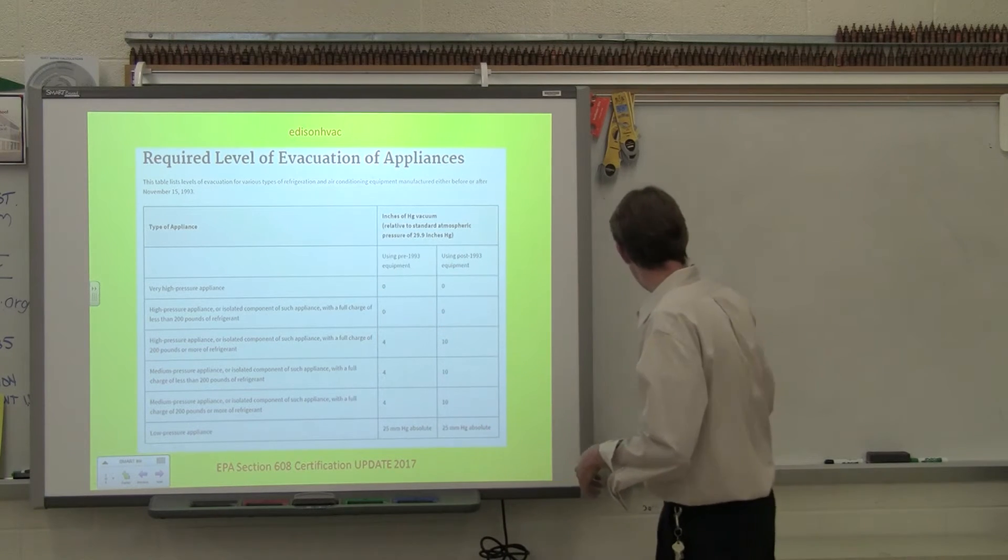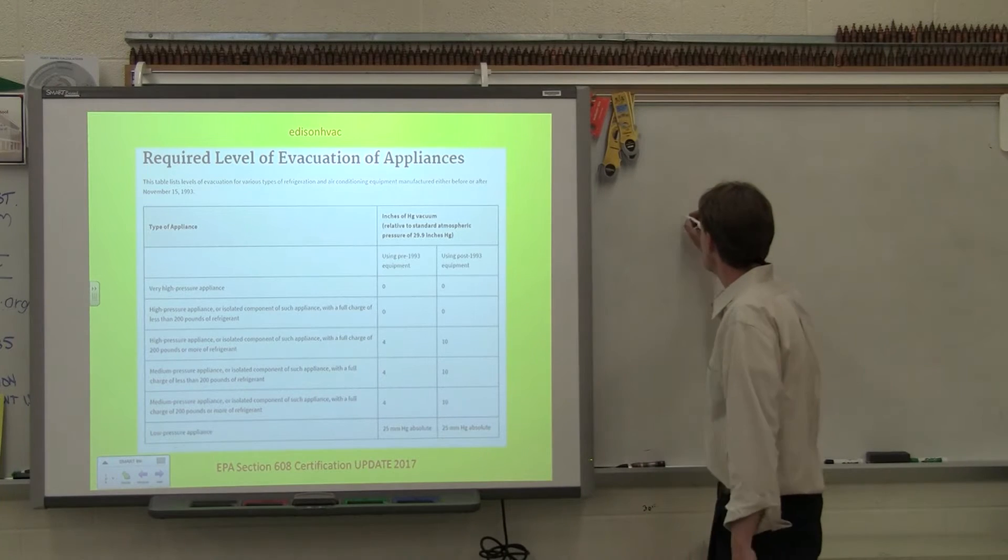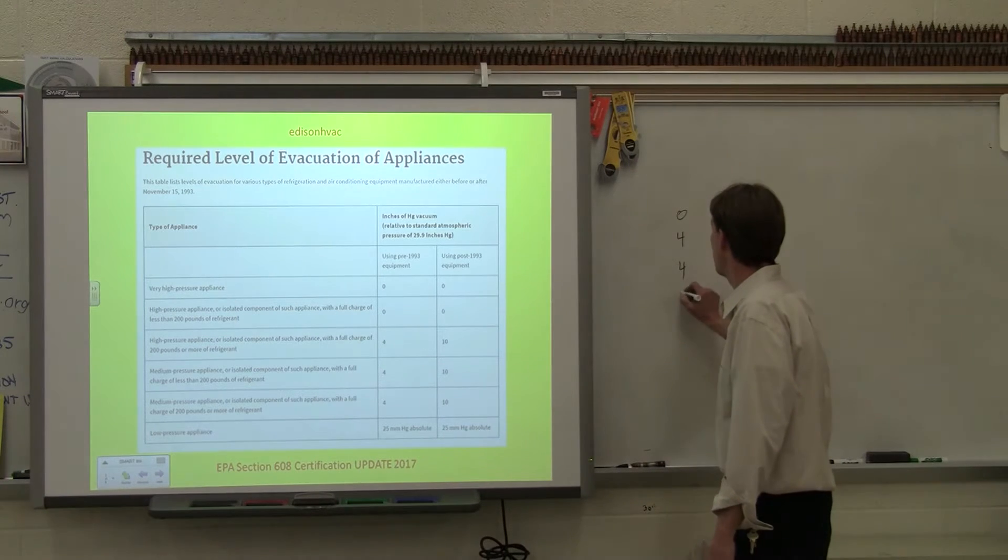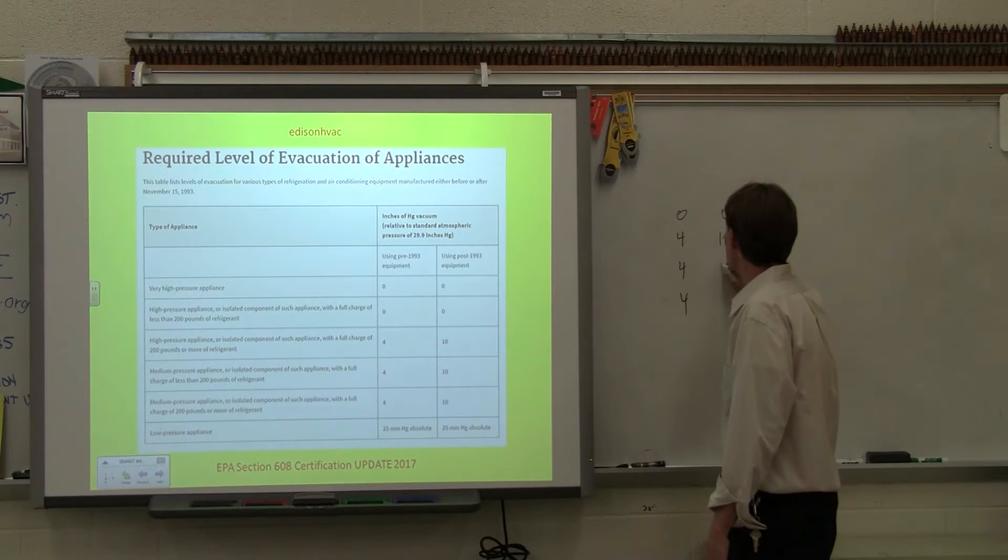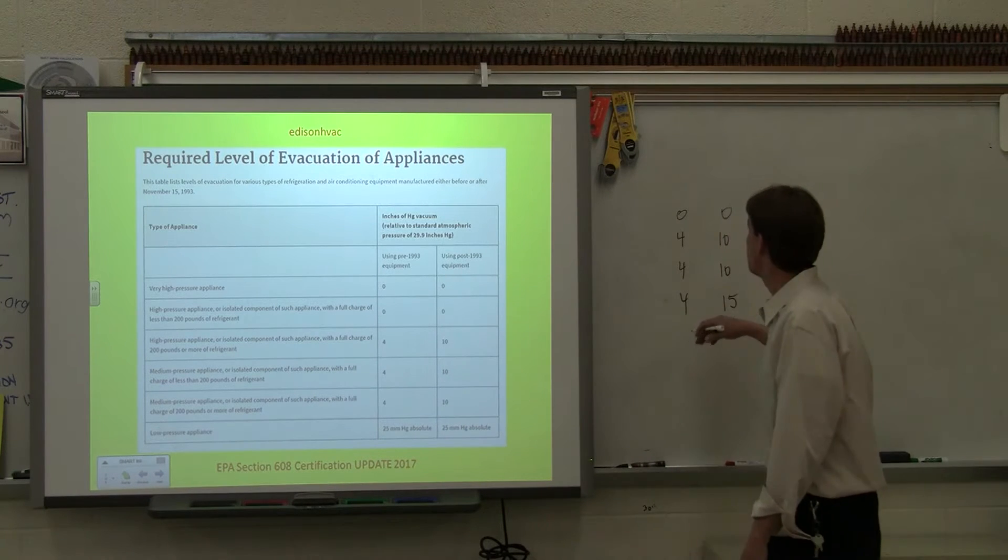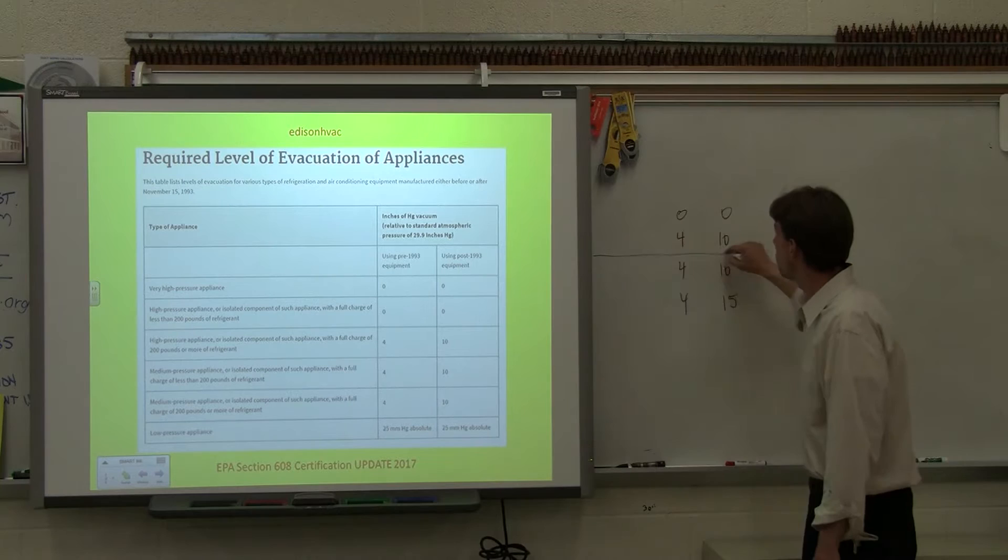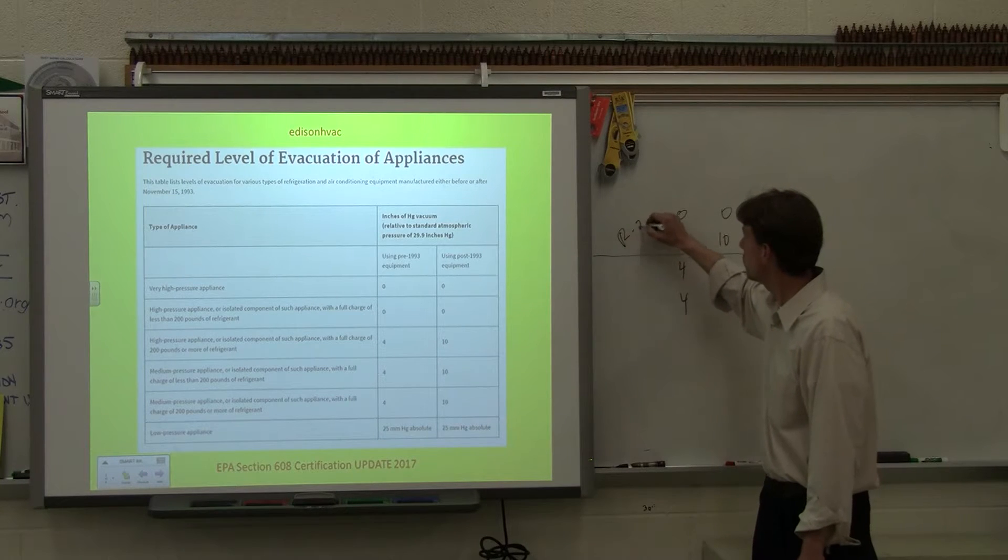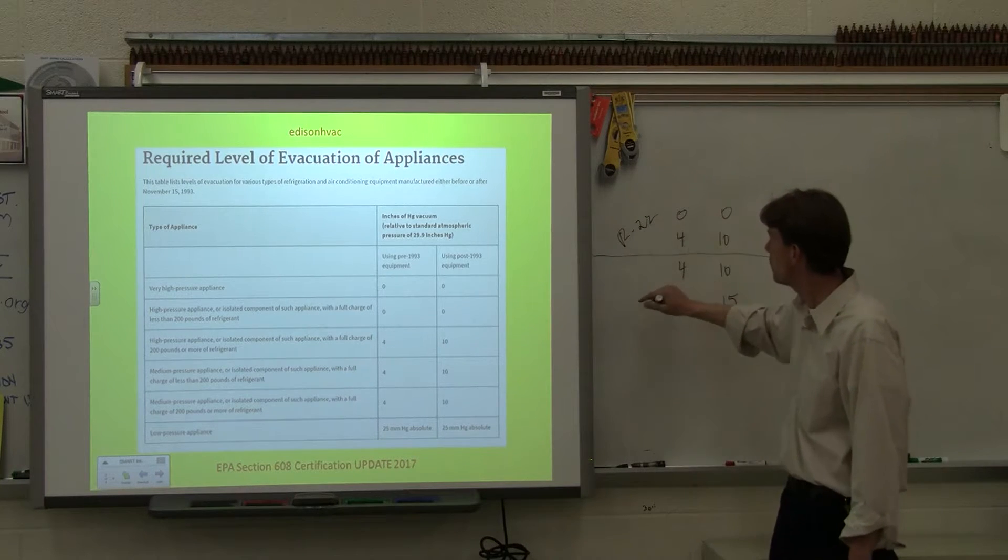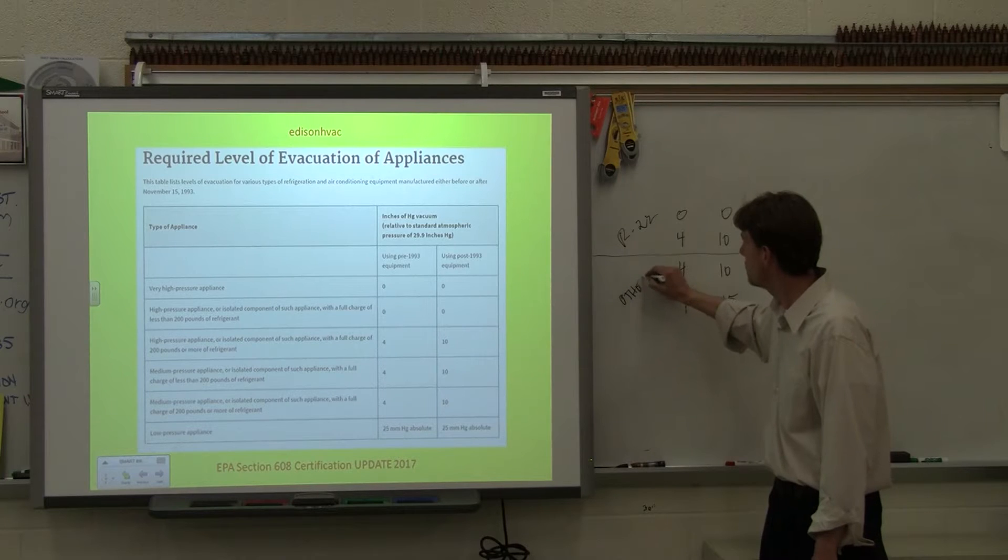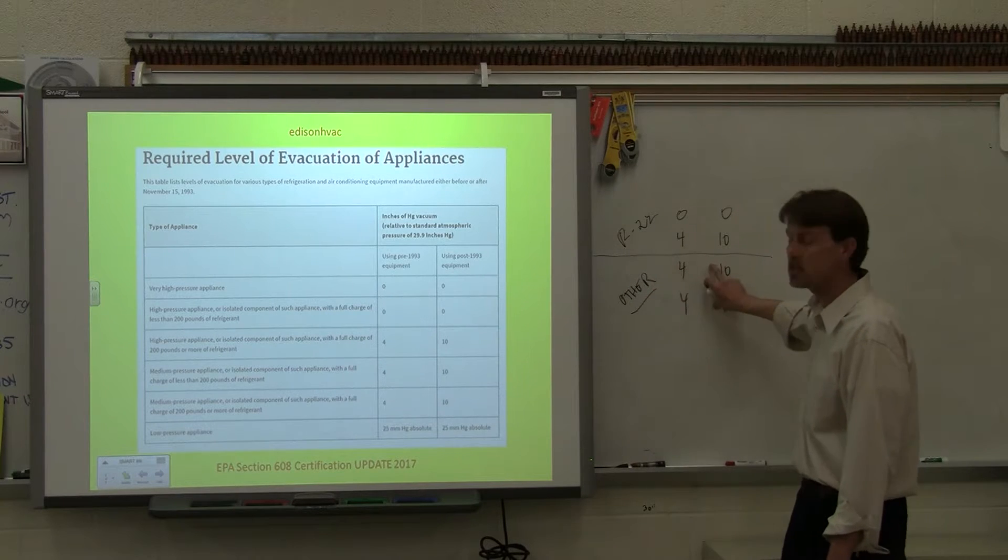Before I used to have the kids remember almost a locker combination of 0, 4, 4, 4, 0, 10, 10, 15 and it was before November 93 and after November 93 and then we had pretty much R22 was the only refrigerant that they were talking about with the first two and all the other refrigerants then fell into these two categories.